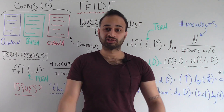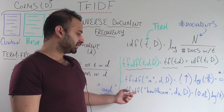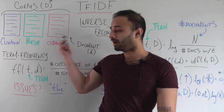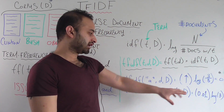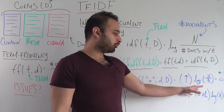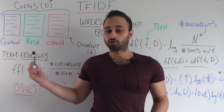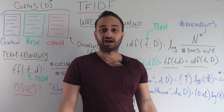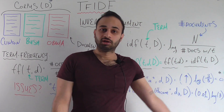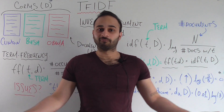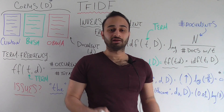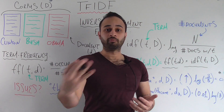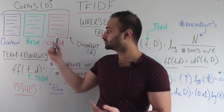Now let's go back to the word healthcare. If we compute TF-IDF of healthcare for D3, the Obama speech, and the entire corpus — we said that 1% of the words in the Obama inauguration speech were the word healthcare, so that's 0.01, times the log 3 we already talked about. I didn't compute this exactly, but it's going to be some kind of positive number. And that's important because it says that healthcare is potentially more helpful in distinguishing between these speeches.